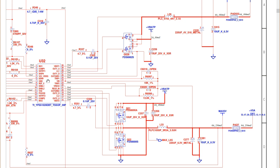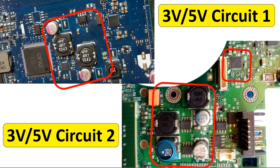If we go to the schematic, it's the same: IC, MOSFETs, inductor, a chemical capacitor, and another capacitor. This is the pad — this pad corresponds to the same point on the board. We have one pad here and another one here. These are the test points where we can check whether we get five volts and three volts or not.